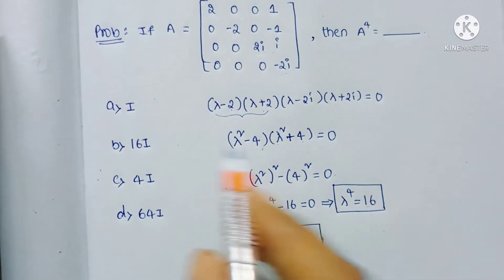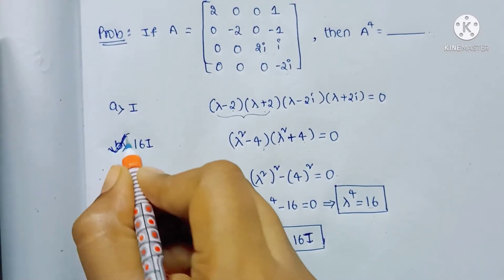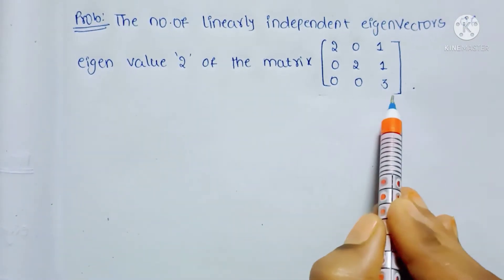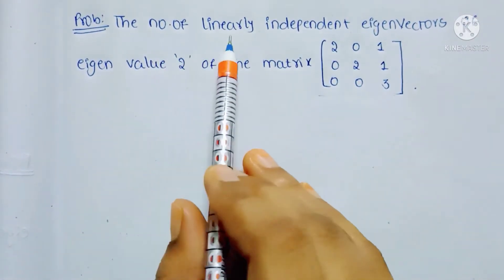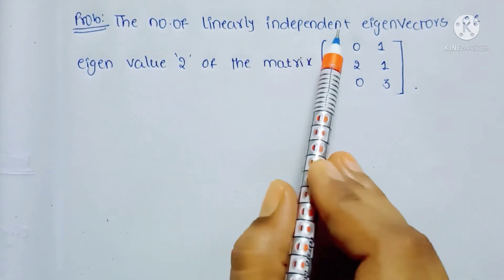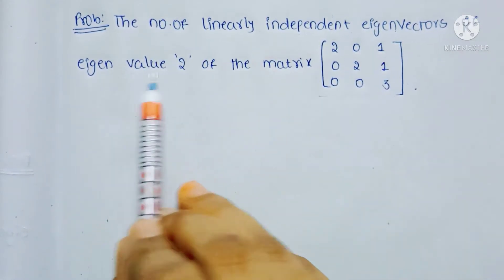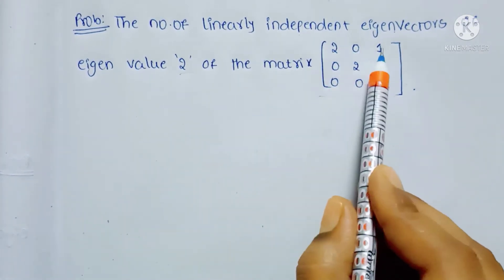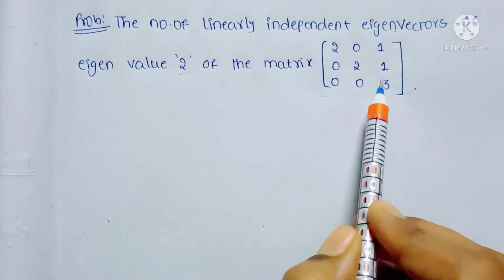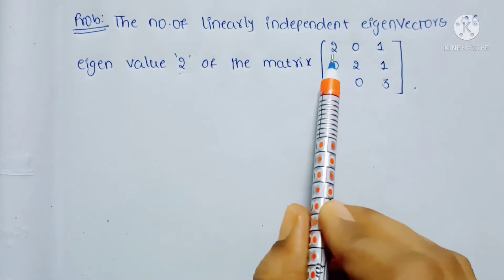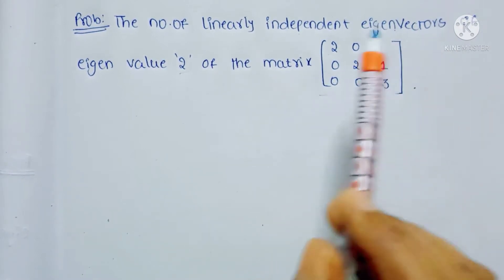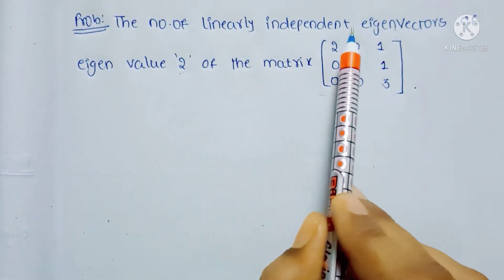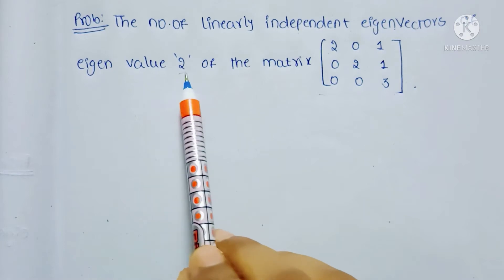So the answer for that question is option B. Now for the next problem, they have given a 3 by 3 matrix and they are asked to find the number of linearly independent eigenvectors for eigenvalue 2. This matrix is upper triangular, so we can directly write the eigenvalues as 2, 2, and 3. But they are asking only for the number of linearly independent eigenvectors corresponding to eigenvalue 2.